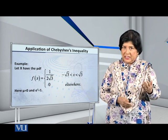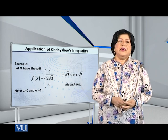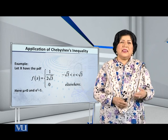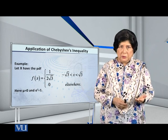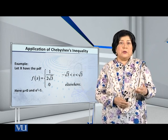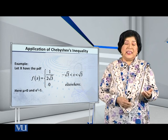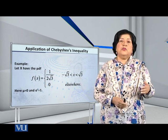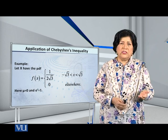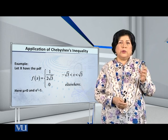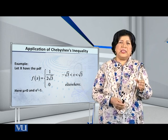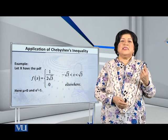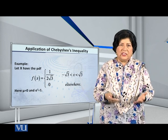Did you realize which distribution this is? It is the well-known continuous uniform distribution. The uniform distribution has f(x) equal to a constant, and the range of x is such that the area under the curve equals 1.